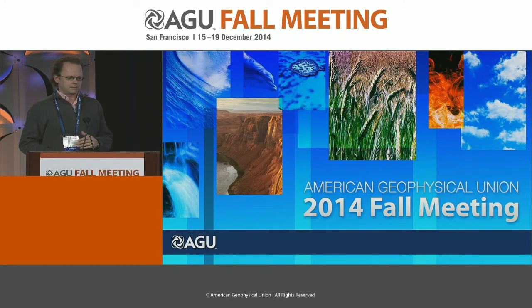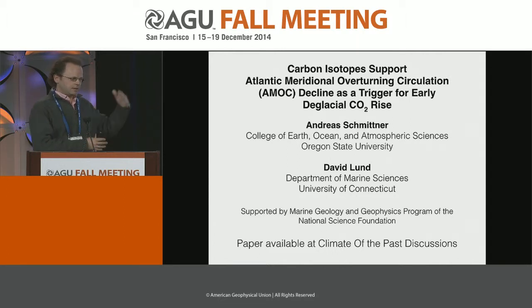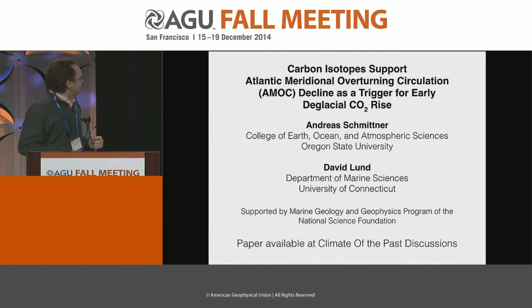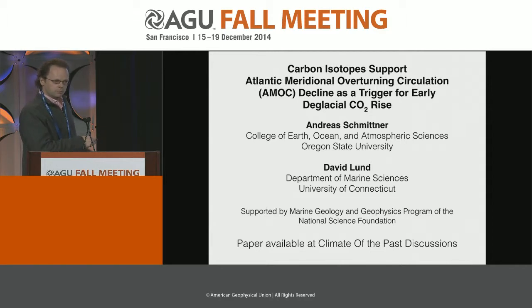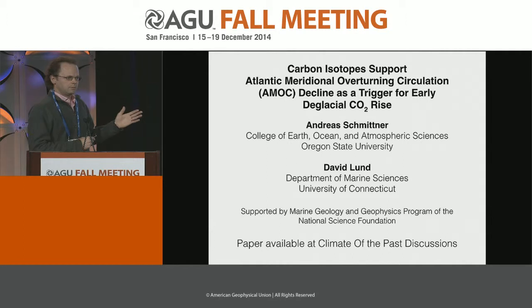The glacial-interglacial variability in atmospheric CO2 has been an enigma for many decades, and we still don't understand it. Maybe instead of focusing on the whole change, looking at it in parts and different intervals may be a better way to understand it. I'm focusing only on the early deglacial CO2 rise — the initial rise from the LGM, last glacial maximum values at around 180 ppm — and about 30 ppm was the CO2 rise at that time.